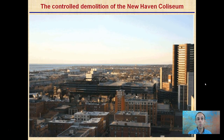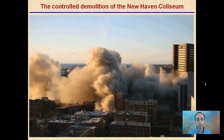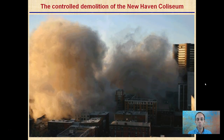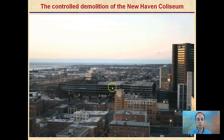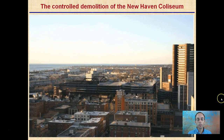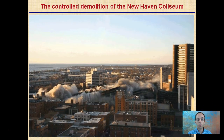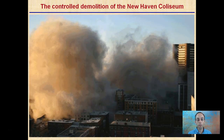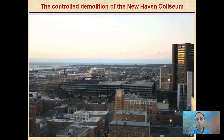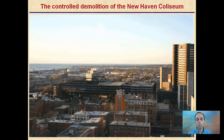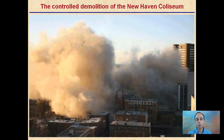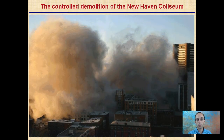You can see that also in the controlled demolition of the Coliseum in New Haven. We start with low entropy — everything's nice, neat, and organized. Then the explosives go off, and now we have a very high degree of entropy. We have that increasing amount of randomness — we start very nice, neat, and organized, and it becomes a very random, messy pile.